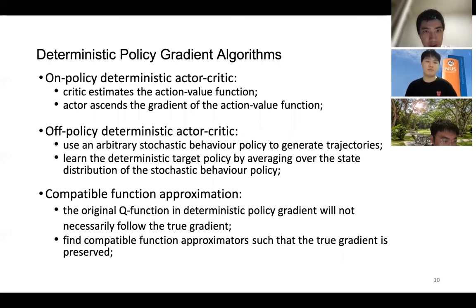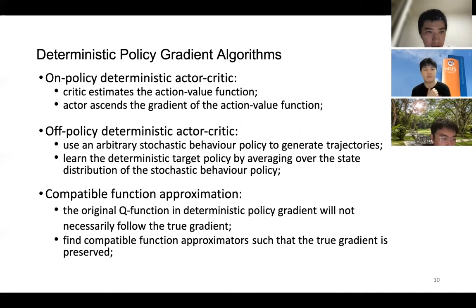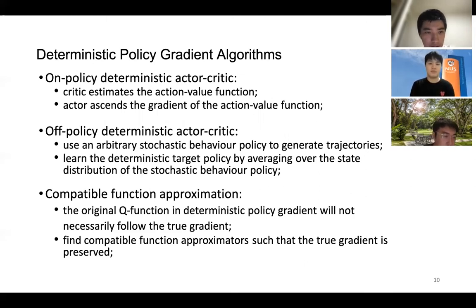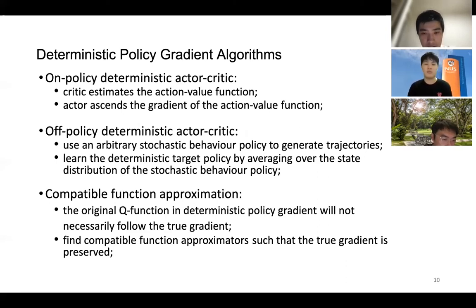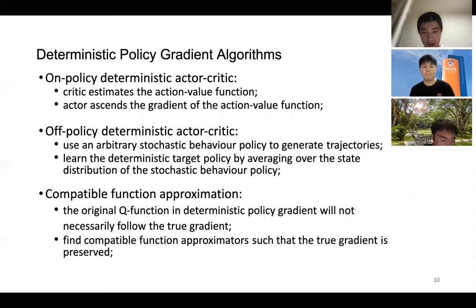For on-policy deterministic actor-critic, the critic estimates the action value function and the actor ascends the gradient of the action value function. For off-policy deterministic actor-critic, we simply use an arbitrary stochastic behavior policy to generate trajectories, and then learn the deterministic target policy by averaging over the state distribution of the stochastic behavior policy. For compatible function approximation, the original Q function in the deterministic policy gradient will not necessarily follow the true gradient, so we find compatible function approximators such that the true gradient is preserved.